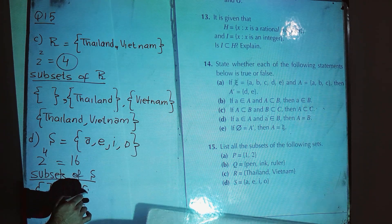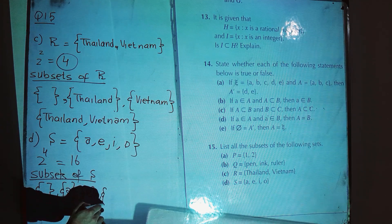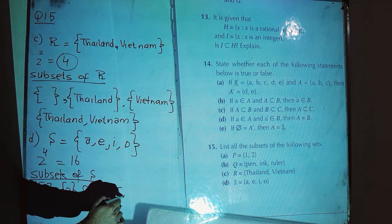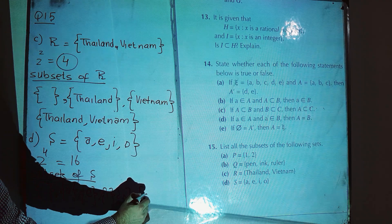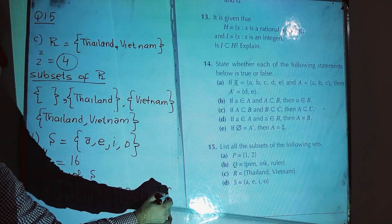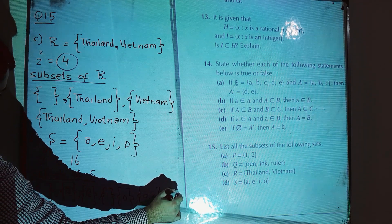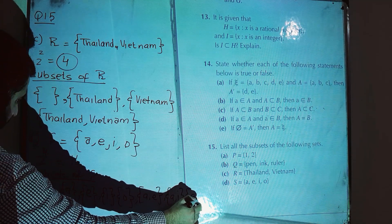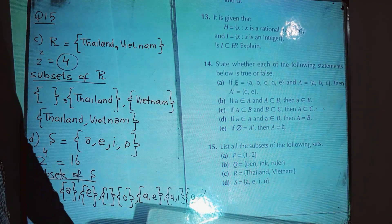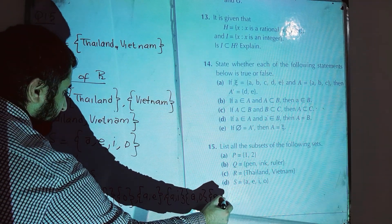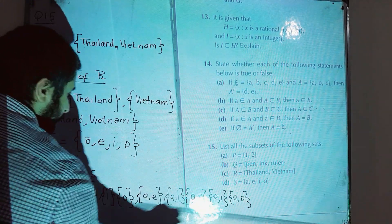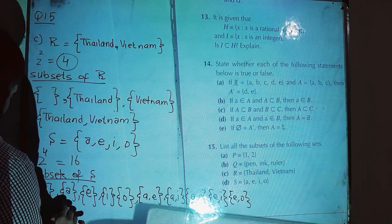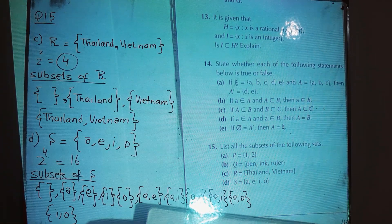Write subsets with single element: {a}, {e}. Then subsets with two elements: {a, e}, then {a, i}, then {a, o}. We can also have {e, i}, then {e, o}, then {i, o}. So these are all the subsets with two elements.